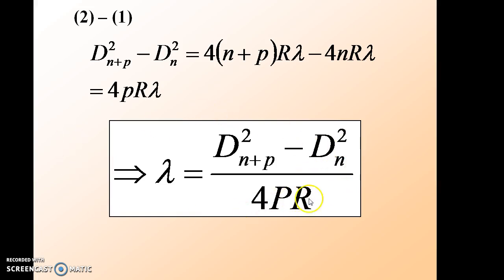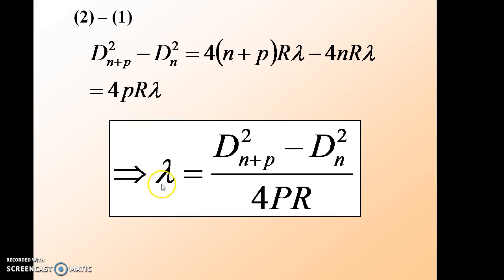In this formula, d_n is the diameter of the nth dark ring, d_(n+p) is the diameter of the (n+p)th dark ring, p is the difference between the ring orders, and r is the radius of curvature of the plano-convex lens. So if you know the radius of curvature, then by measuring the diameters of the nth and (n+p)th dark rings you can calculate the wavelength of the monochromatic source of light used to obtain the Newton's rings pattern.